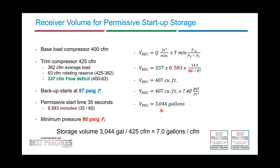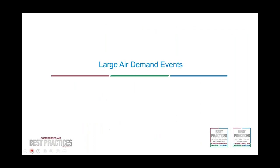You'll notice where the three-to-five gallons per CFM rule of thumb leaves us: this storage requirement for permissive startup time requires seven gallons per CFM of the trim compressor. So the three-to-five gallon rule of thumb is really only for efficient unloading and loading of a lubricant-injected rotary screw compressor. If you want to cover a standby event like an unanticipated compressor shutdown, do the calculations.